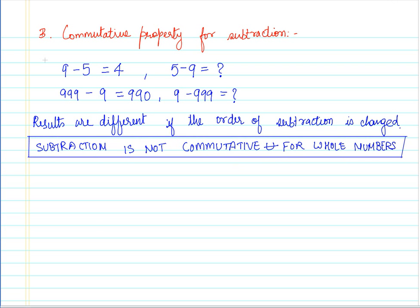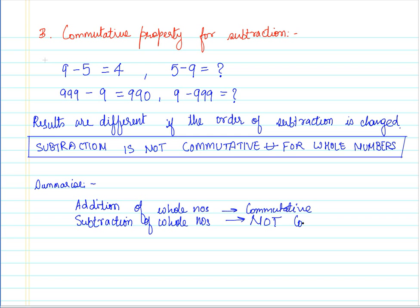You can verify this for lots of numbers. Just to summarize our discussion on commutative property for addition and subtraction: Addition of whole numbers is commutative. It follows the commutative property, which implies that we can add two numbers in any order and the results will still be same. Whereas, subtraction of whole numbers is not commutative, which means if you change the order of subtraction, you get different results.